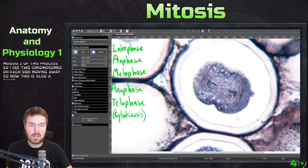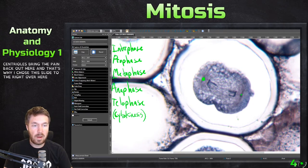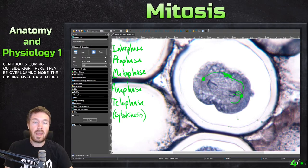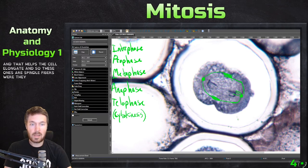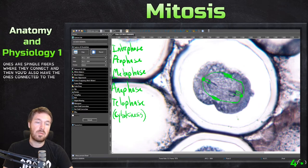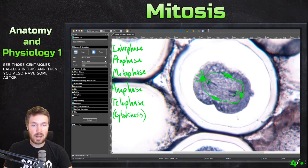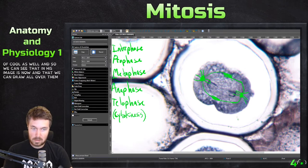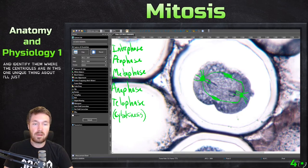This is also a specific stain for centrioles, and that's why I chose this slide. Right over here is a pair, and right over here is a pair, and then all these fibers coming out — you can see the centrioles coming out. Right here they'd be overlapping where they're pushing over each other, helping the cell elongate. These are spindle fibers connecting to the chromosomes. We can actually see those centrioles labeled in this image, and you also have some asters coming out the back, which are pretty cool as well.